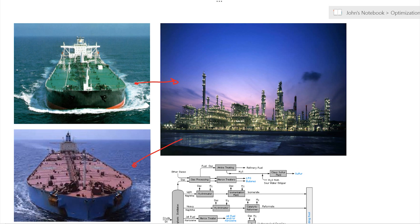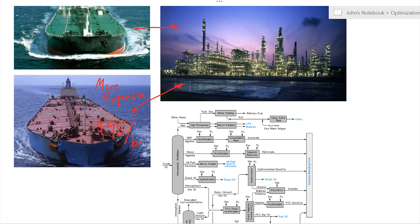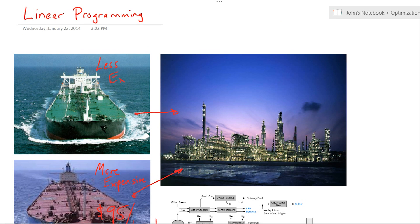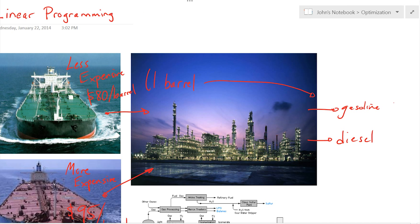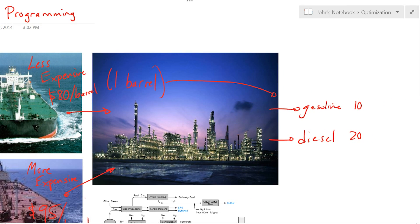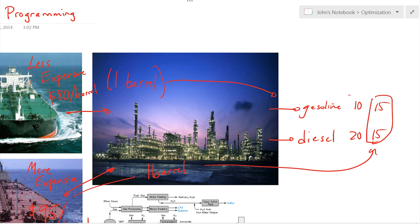We have a refinery optimization problem where we have a more expensive crude at $95 per barrel and a less expensive crude at $80 per barrel. The refinery produces gasoline and diesel. For this simplified case, one barrel of the less expensive crude produces 10 gallons of gasoline and 20 of diesel, and the more expensive one produces 15 of each.